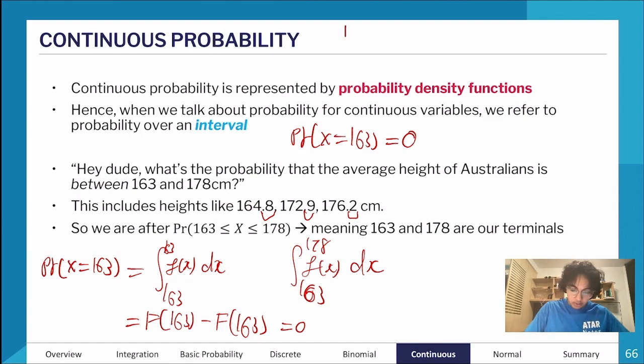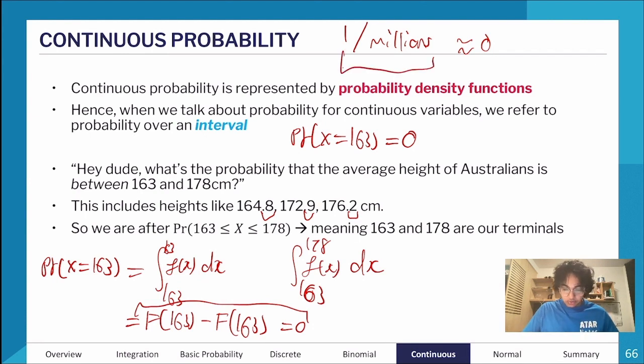It's just approximately zero. In both mathematically using the calculations we've been taught, and using sense and logic, we can see why with continuous probability it's really hard to find a particular value that's not equal to zero.